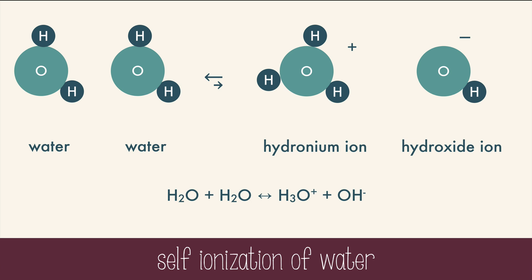Most water molecules will stay as water molecules and not separate into ions. The concentration of hydronium is 1×10⁻⁷, a very, very tiny amount. And the concentration of hydroxide ion is the same, because they both came from the splitting of a water molecule.